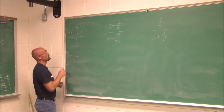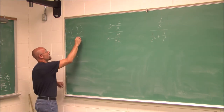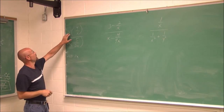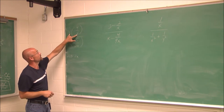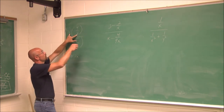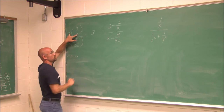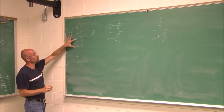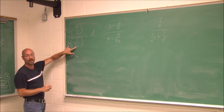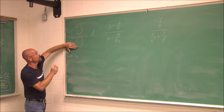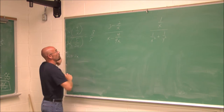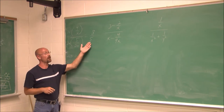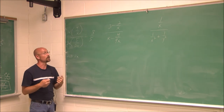Once we've determined the LCD, the second step is to multiply all terms by it. So I'm going to multiply the numerator and the denominator by 2x. When I multiply 2x times (4/x), the x's cancel, leaving 2 times 4, which is 8. When I multiply 2x times (5/2x), the 2x cancels, leaving 5. We've already arrived at the answer: 8/5 — which is exactly what we got using method 1.